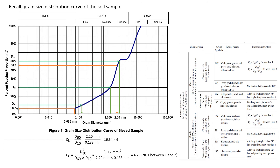Let's move on to the USCS classification. Recall the grain size distribution of the soil sample. The first thing we have to do is determine the particle size corresponding to the 60% passing proportion, the 30% passing proportion, and the 10% passing proportion, as indicated by the green lines on the graph. For 60%, it is roughly 2.00 millimeters. For 30%, it is roughly 1.0 millimeters. And for 10% passing proportion, it is roughly 0.100 millimeters.